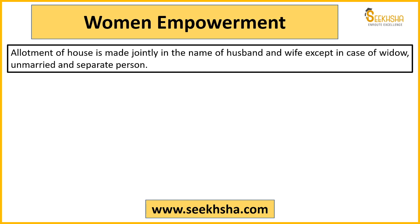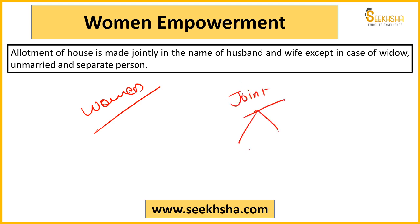There is also a women empowerment provision in PMAY. It is clearly written in Pradhan Mantri Awaas Yojana that the allotment of the house will either be in the woman's name or in a joint name of husband and wife. It cannot be only in the husband's name, unless there is separation, or the person is unmarried, or the wife has passed away.